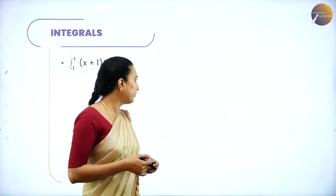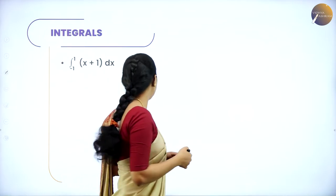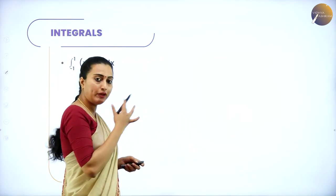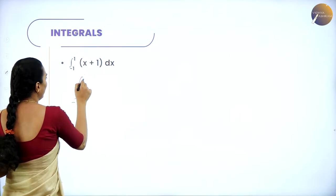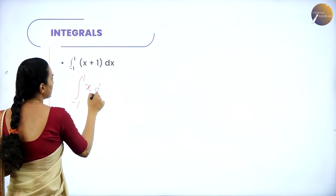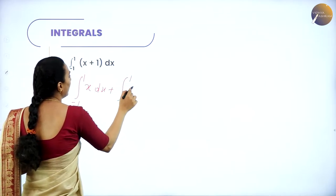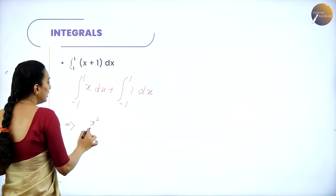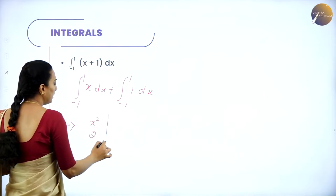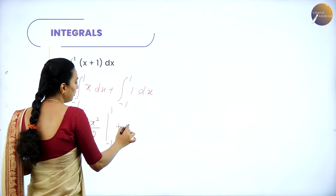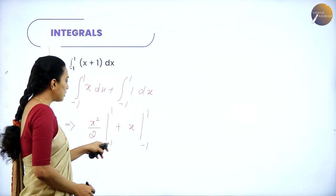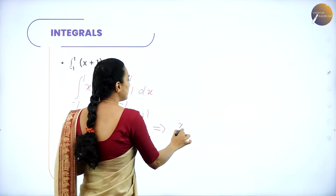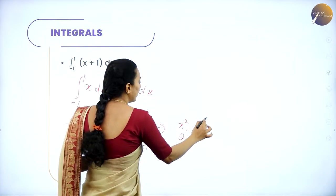The first problem is: integral from -1 to 1 of (x + 1)dx. Let us split the integral into integral from -1 to 1 of x dx, plus integral from -1 to 1 of 1 dx. The integral of x dx is x²/2, and the integral of 1 dx is x. Together we can write this as x²/2 + x from the limit -1 to 1.